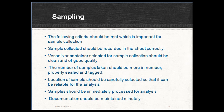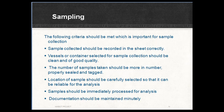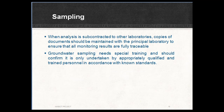The following criteria should be met for sample collection. Samples collected should be recorded in the sheet correctly. Vessels or containers selected for sample collection should be clean and of good quality. The number of samples taken should be adequate, properly sealed and tagged. Location of the sample should be carefully selected so that it is reliable for analysis. Samples should be immediately processed; if not, they should be preserved appropriately to meet international standards. Documentation should be maintained in detail, and when analysis is subcontracted to other laboratories, copies of documents should be maintained with the principal laboratory to ensure all monitoring results are fully traceable.